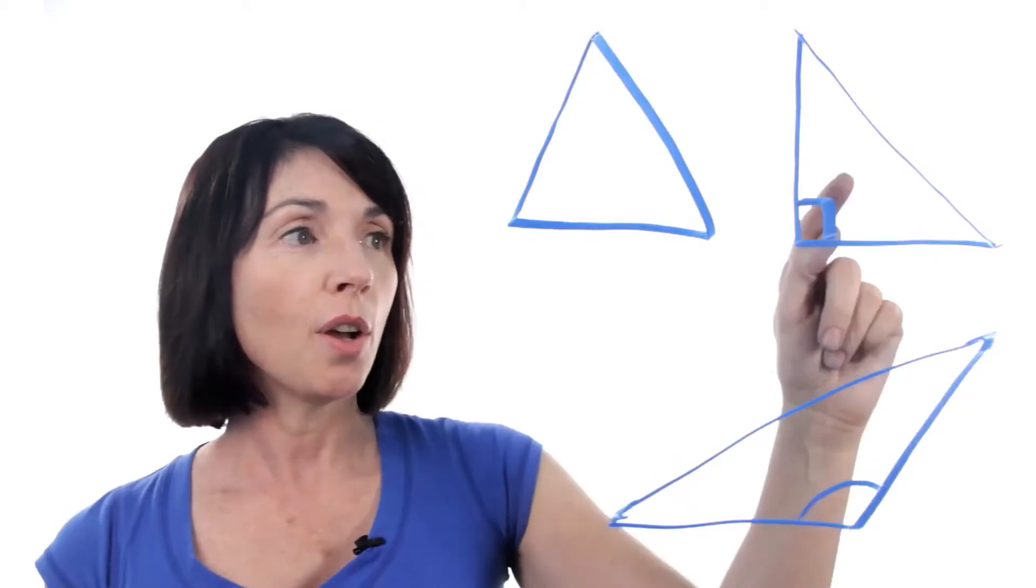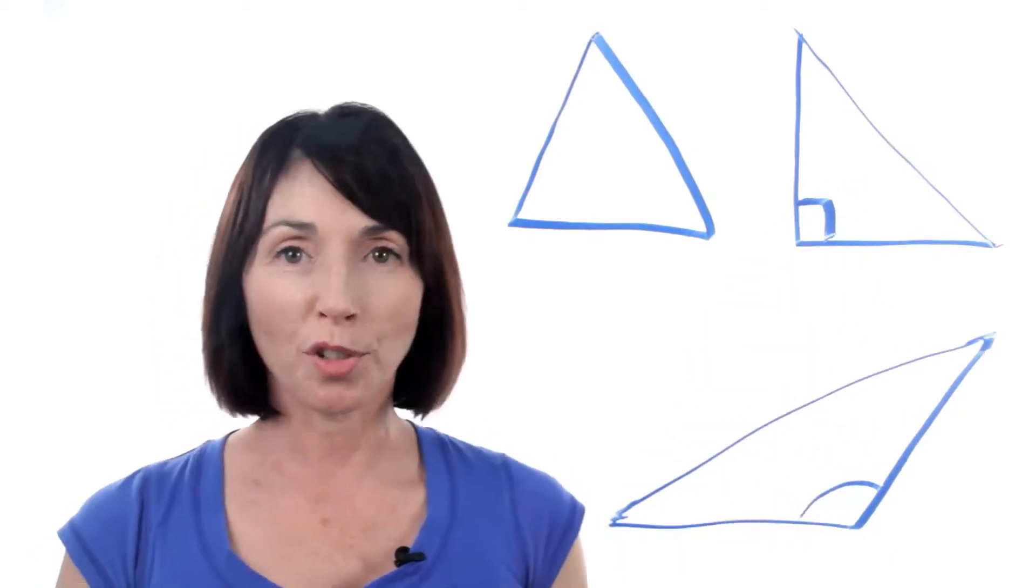So you have acute triangles, right triangles, and obtuse triangles. And that's one way to classify triangles.